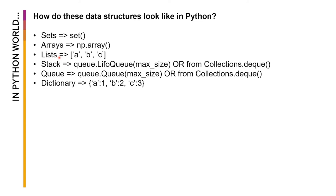For stacks, if you want to leverage on a data structure where whoever comes in last will be the first one to come out. You can imagine a stack of Pringles — whoever is on top of the stack is the first one you can get. For queues, you can imagine a line of people or a queue of cars in traffic. Whoever comes in first comes out first.